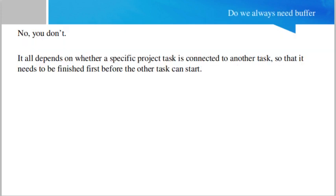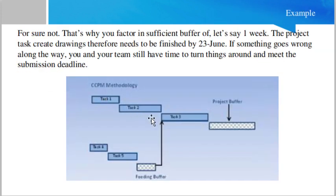So the main concept is: take task 1, task 2, and then there is a 7-day buffer at the end. If anything goes wrong — the engineer gets sick, is unavailable for a day or two, or any emergency happens — you still have those 7 days of buffer, and your project will not be delayed because of that activity.